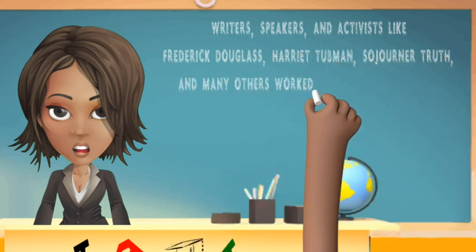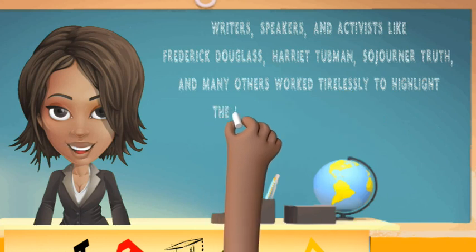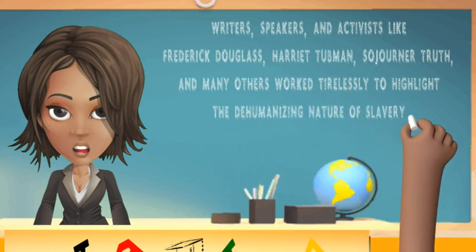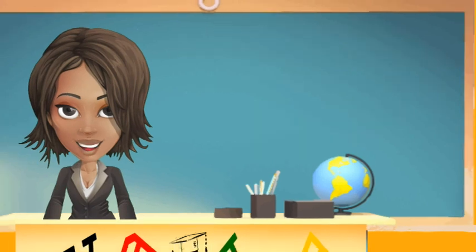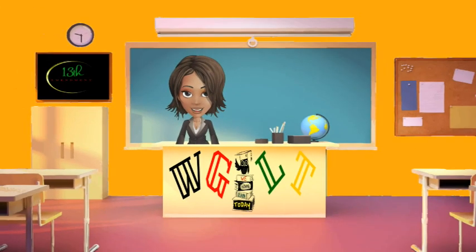Writers, speakers, and activists like Frederick Douglass, Harriet Tubman, Sojourner Truth, and many others worked tirelessly to highlight the dehumanizing nature of slavery and promote its abolition. The 13th Amendment's impact extended beyond its immediate goal of ending slavery — it laid the groundwork for subsequent civil rights legislation and legal decisions that aimed to rectify deep-rooted racial injustices.